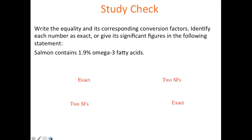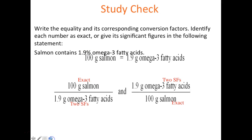Study check: salmon contains 1.9% omega-3 fatty acid. That means in 100 grams of salmon, 1.9 grams is omega-3 fatty acid. The 100 is exact, and 1.9 is considered to have two sig figs.